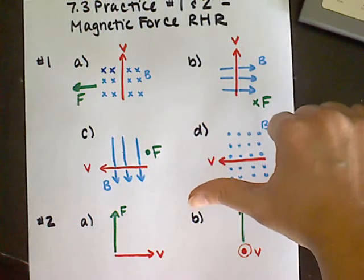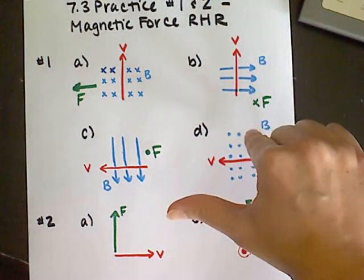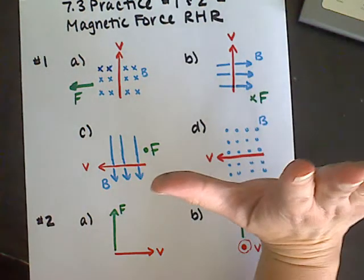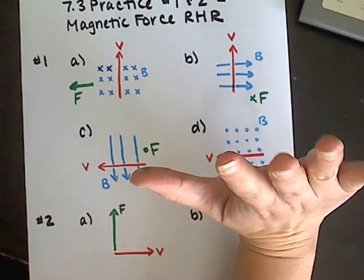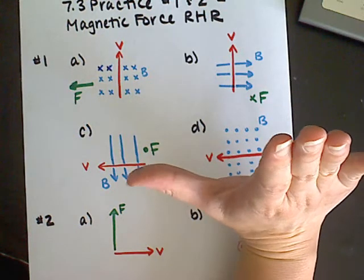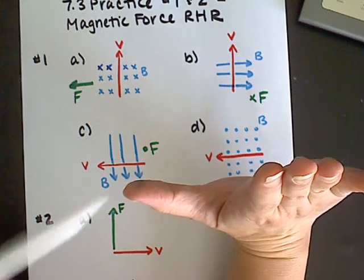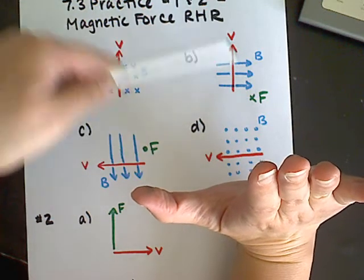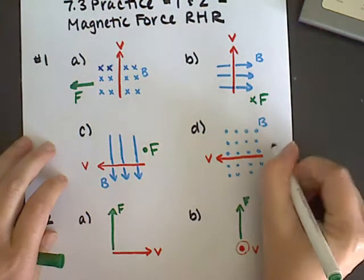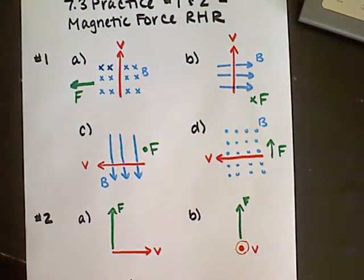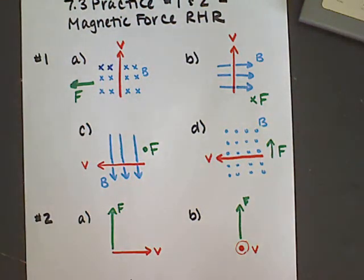For the last part of number one, my velocity is again directed to the left, but now my magnetic field is pointing out of the paper. I rotate my hand so my fingers are also pointing out of the page, with my thumb still pointing to the left. At this point, my palm is facing upward with respect to the paper, so the direction of the force is upward.